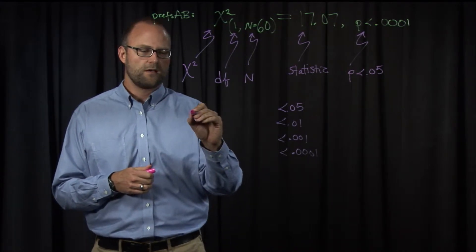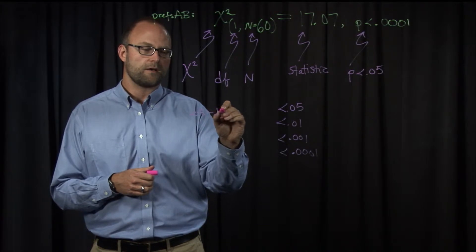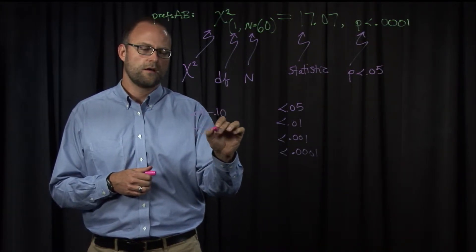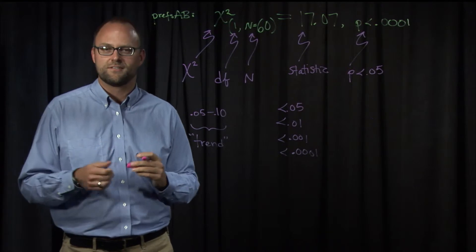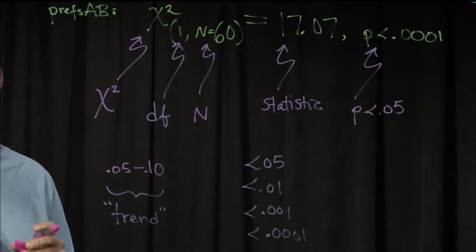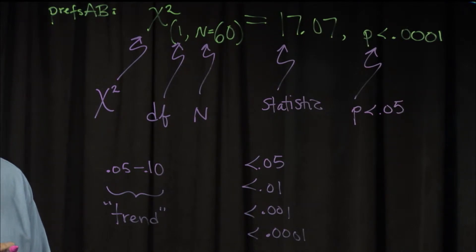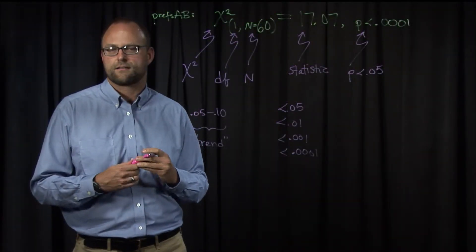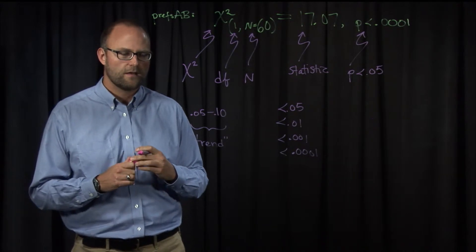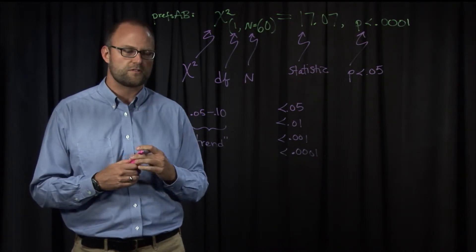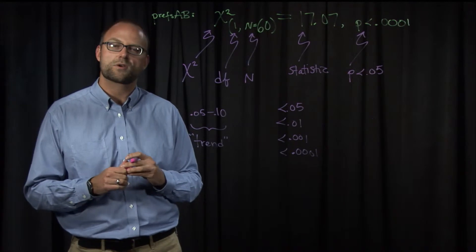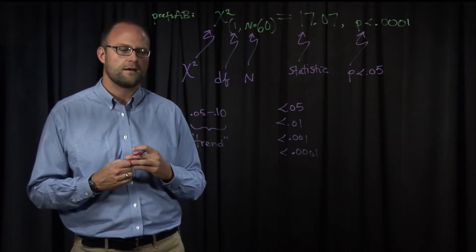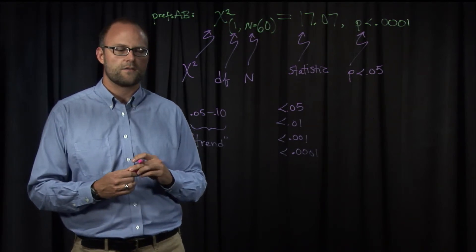For p-values between 0.05 and 0.1, sometimes these are of interest. They're often given the name a trend or a kind of marginal result. They're not statistically significant, but they may still be of interest. It may be that with more data, more subjects, more responses in our case for this study, it may be, in fact, a trend that would head towards statistically significant. But some people find those of interest, and sometimes they're called trends. Be careful about whether or not you kind of treat those as if they're statistically significant, because they're really not. But they may be of interest and point the way towards something that you want to look into further.